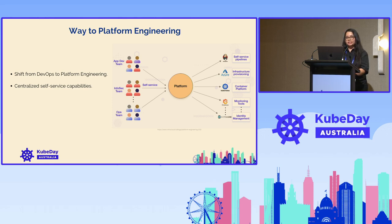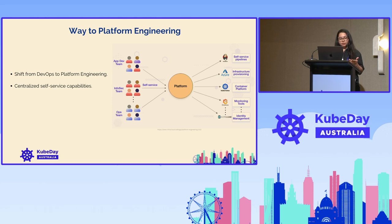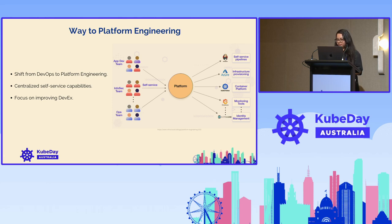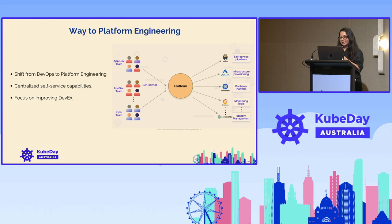With centralized self-service capability, it increases our automation. We don't have any manual work like submitting a ticket and then going to the operations team. We are simply utilizing the automation provided by the platform. The focus is on improving DevX, because you don't want your developers just following up with tickets and the operations team — that's very less productive and eventually increases the time to deliver your project. As you can see in the diagram, all the teams — app dev, infosec, and ops — come together in self-service, with integrations like Jenkins, Azure, cloud providers, Kubernetes, and monitoring and observability tools, all integrated with a single identity management.